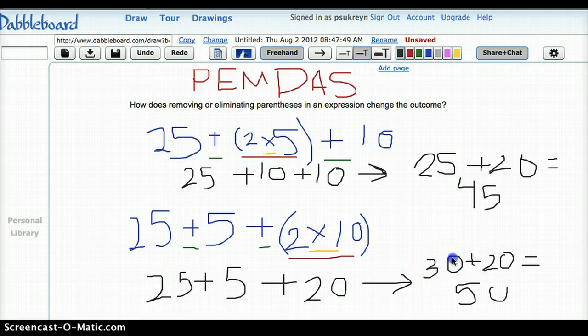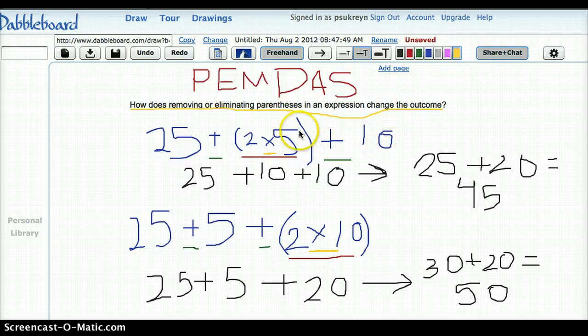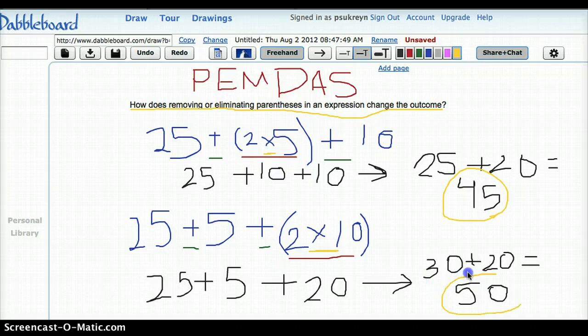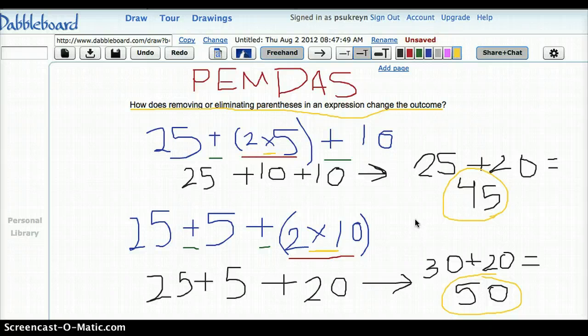So going back to what our question was in the beginning. Okay, how does removing or eliminating parentheses in an expression change the outcome? Well, clearly it does. We had similar numbers in both expressions, but the parentheses and the operations were different in different places. Once we use our order of operations and we solve, we found that this came to a sum of 45 and this expression came to a sum of 50. So in fact, removing, eliminating, or changing the order of the parentheses or the place of parentheses in an expression truly does change the outcome.